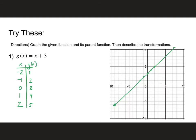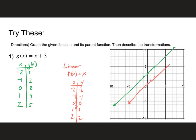Okay, so here we have g of x equals x plus three. I went ahead and made the table of values and graphed it. This is a linear equation, so the parent function is f of x equals x. We know that table of values. Comparing the two functions, the red function turned into the green function — it went up three units.